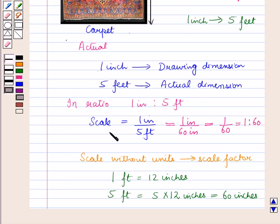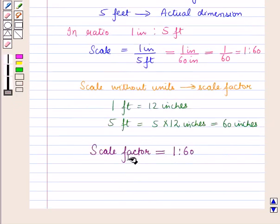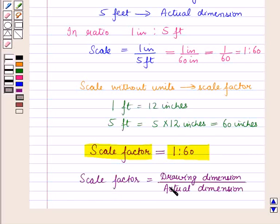The scale is written as 1 is to 60 — written without units — so 1 is to 60 is the scale factor. The scale factor is equal to the drawing dimension divided by the actual dimension.